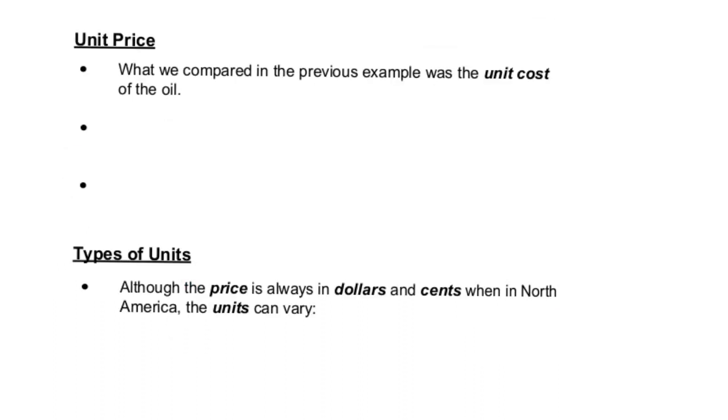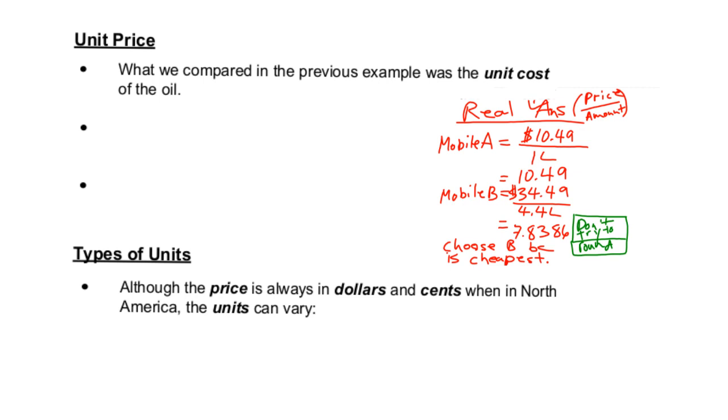In the previous example, there were two types of oil. There was Mobil A and Mobil B. What we were actually comparing was a thing called the unit cost. The key idea is to always consider dividing the price by the amount of something. You'll notice that both of the amounts have to be in the same unit.